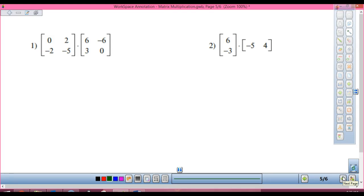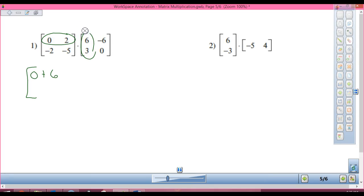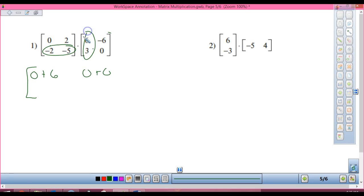All right, so let's do number one here. Top row, first column. First numbers? Zero. Plus second numbers? Six. Two times three. Those are our second numbers. First row, second column. Zero. Plus zero. Good. And now we're on second row, first column. First numbers? Negative 12. Plus second numbers? Negative 15.